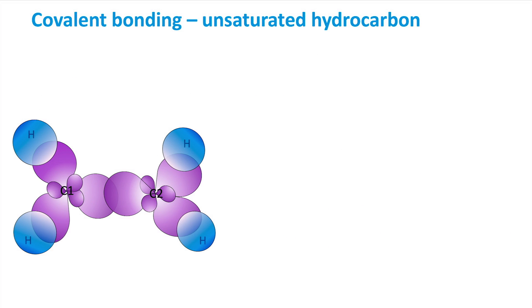Unsaturated molecules, on the other hand like ethene, which has the molecular formula C2H4, have one or more free p orbitals on each atom.